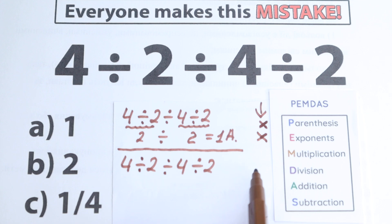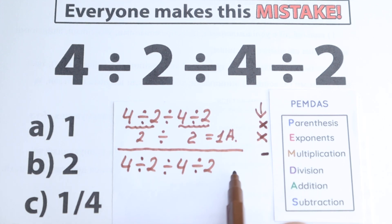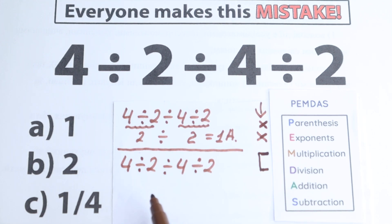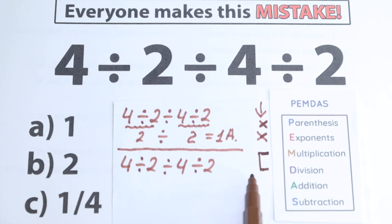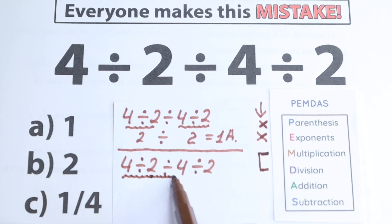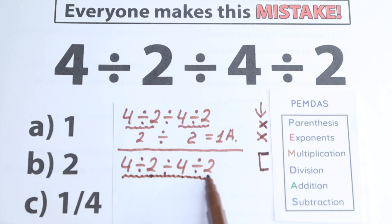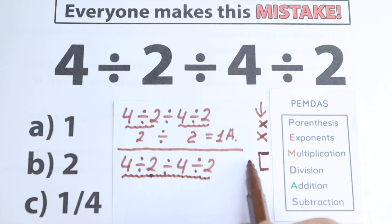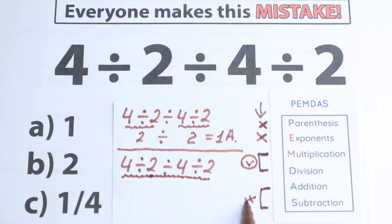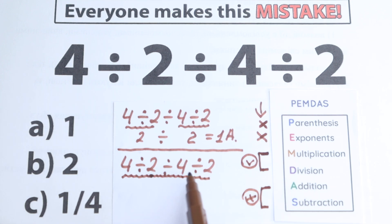Next: multiplication. A common mistake is to look only for a multiplication sign, but you need to treat multiplication and division together as one group. Scanning the expression: we have division signs throughout — no multiplication sign, but we have division signs. And we don't have any addition or subtraction, so we can skip the last step. We have only division here.